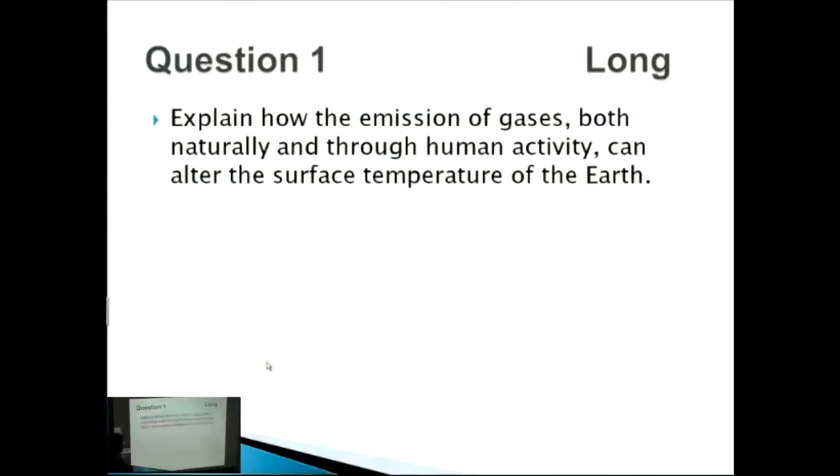The question we're talking about here is essentially based on global warming, greenhouse gases, all that modern stuff which is happening right now. The question we're going to read is: explain how the emission of gases both naturally and through human activity can alter the surface temperature of the earth.